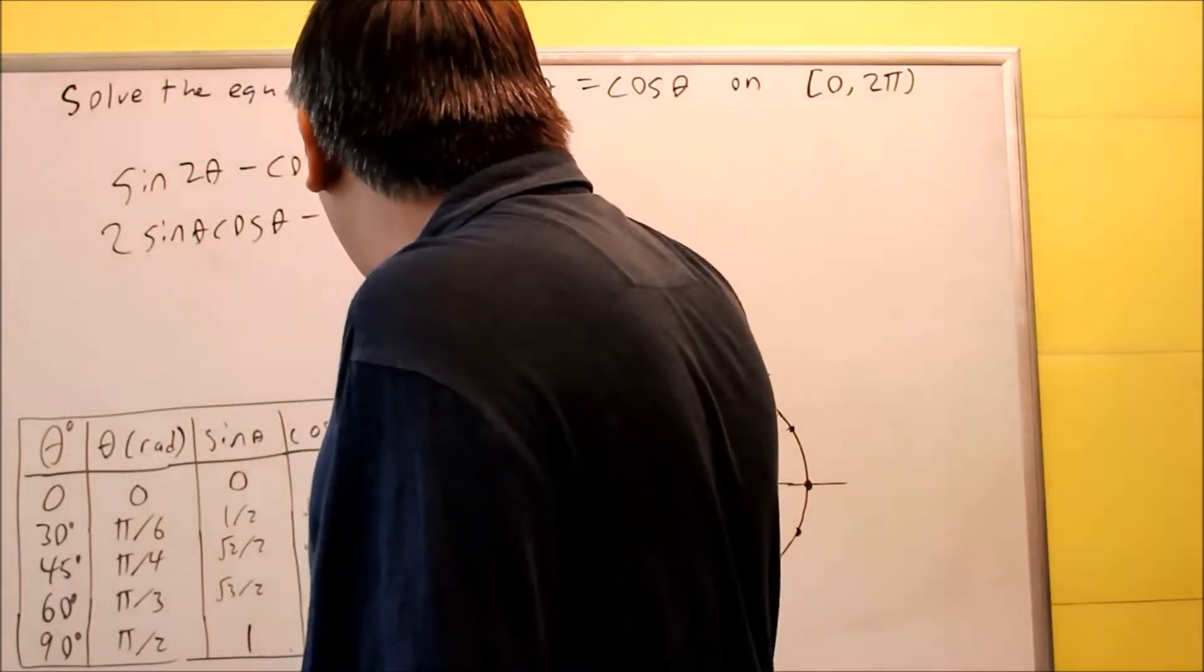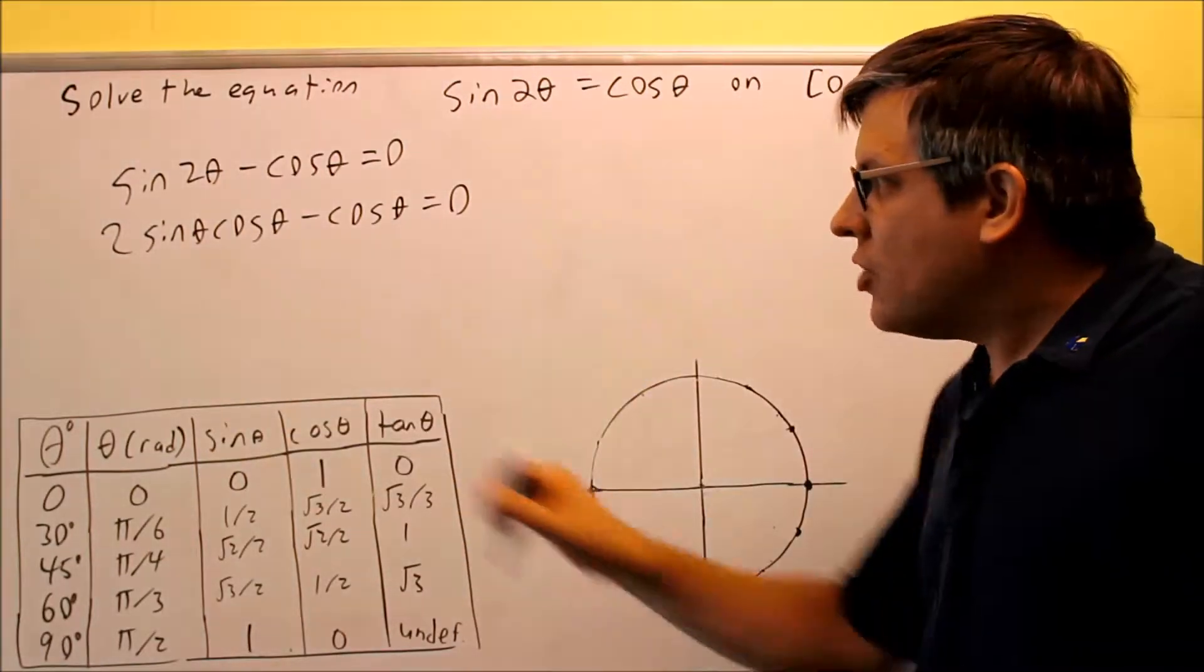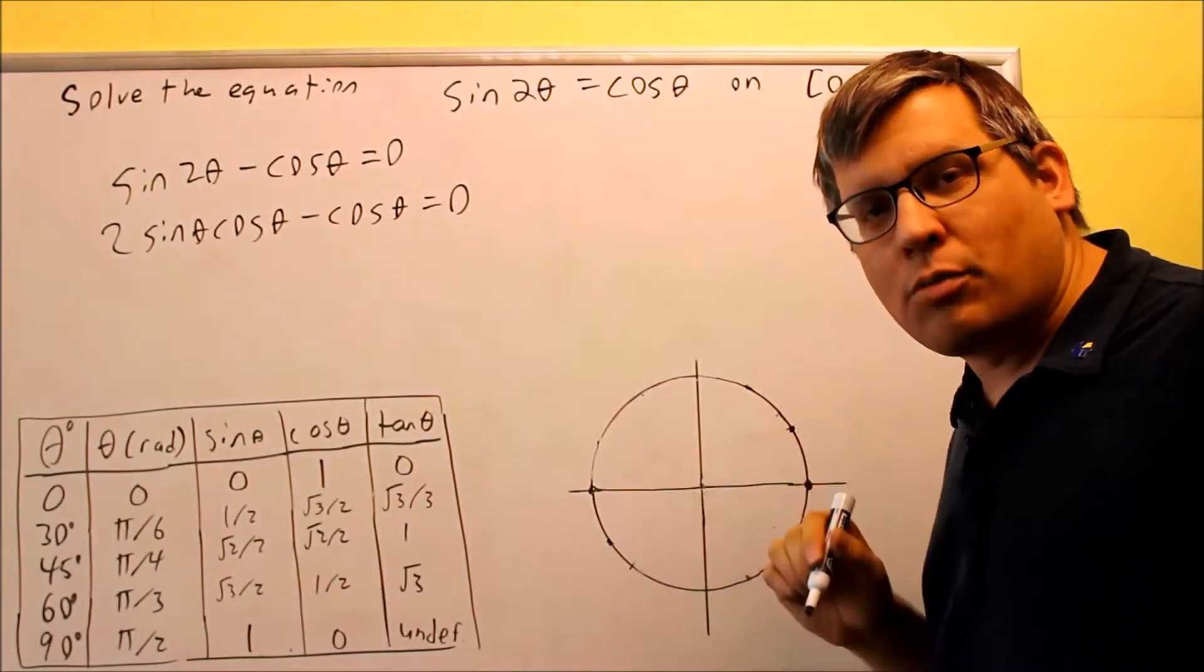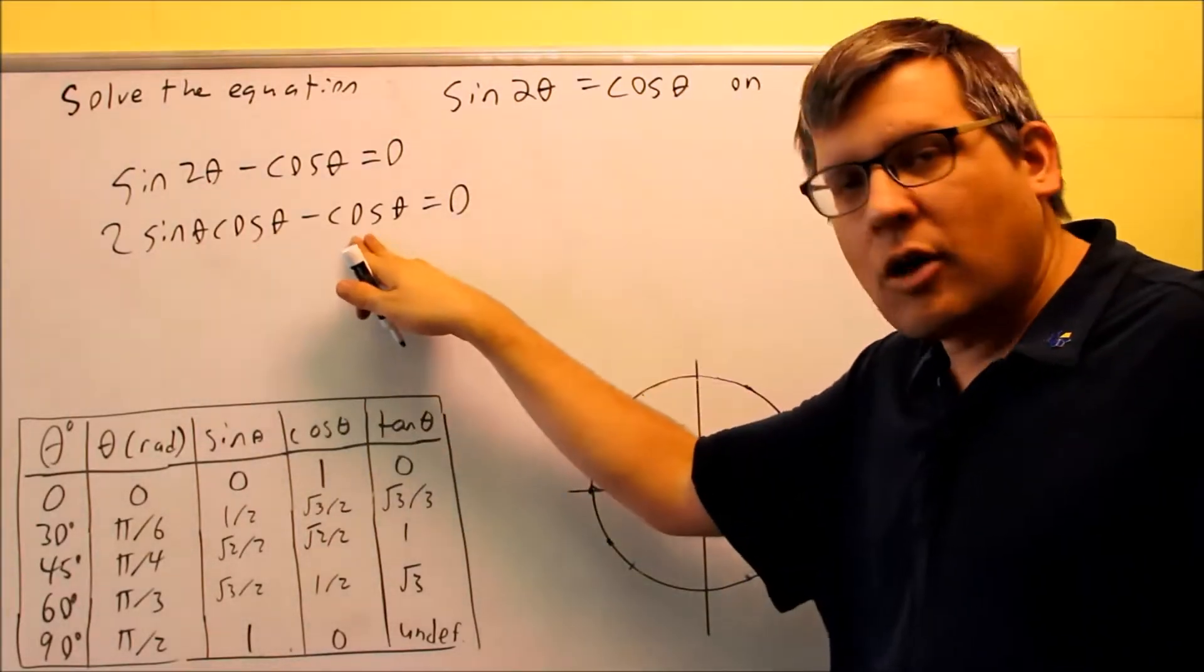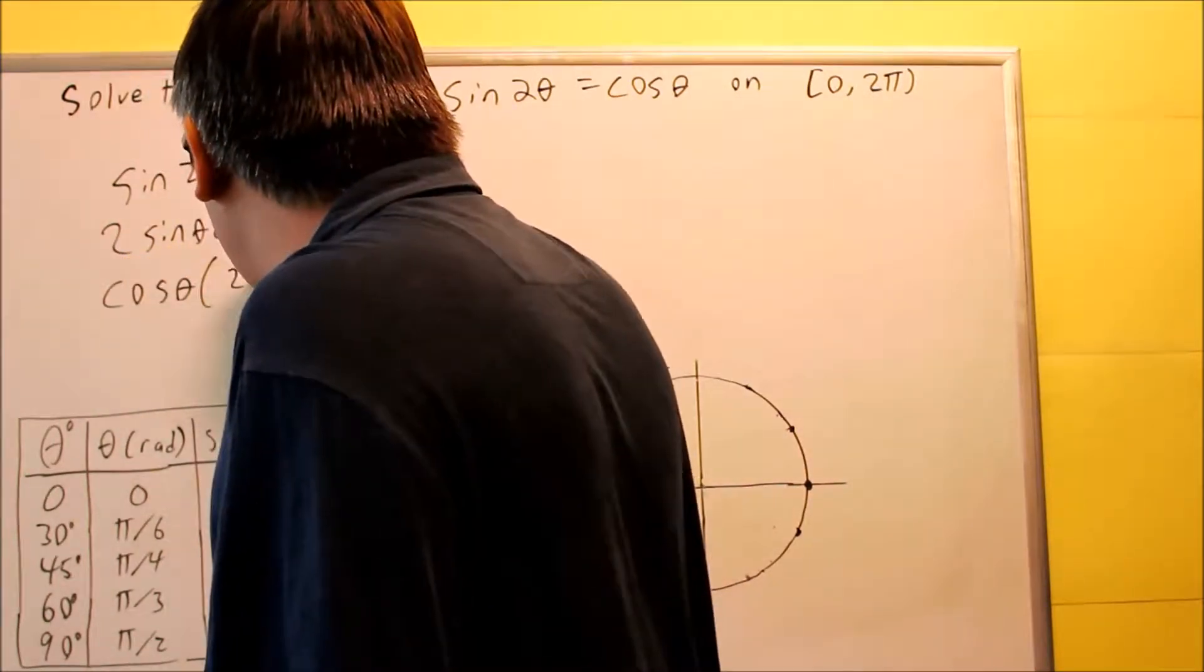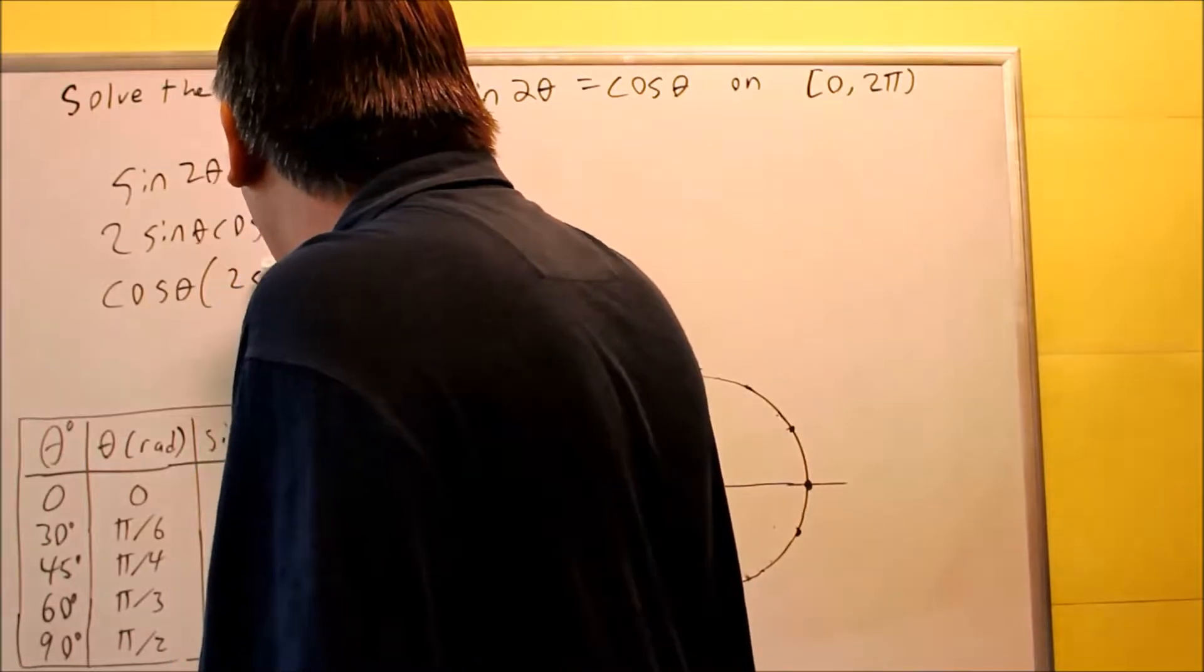So I'm going to replace the sine 2 theta with its identity, and now I have that. By doing that, now it allows me to see that I have a common factor here that I can pull out. So I can pull out a cosine theta from each of these. So cosine theta, and I have 2 sine theta minus 1 left over.